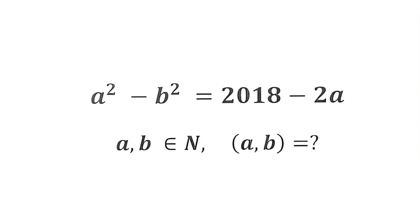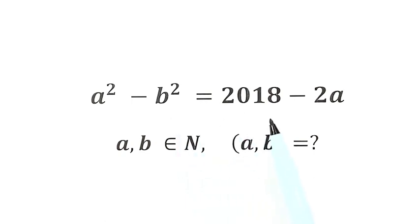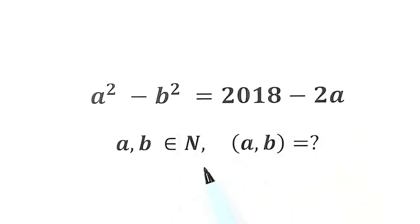In this video, we're going to solve this equation: given a squared minus b squared equals 2018 minus 2a, where a and b are positive integers. Then we want to solve for ab. This question is from the Australian Math Olympiad.